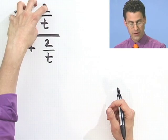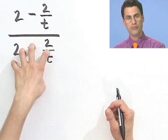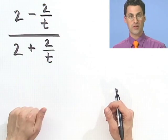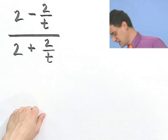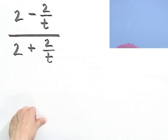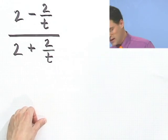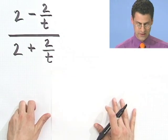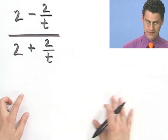One way is to do exactly what I just advertised: get a common denominator and make this as one fraction, and then invert and multiply. Let's think about that for a second. I'm going to do it for you really fast, just so you can sort of get the sense of this.